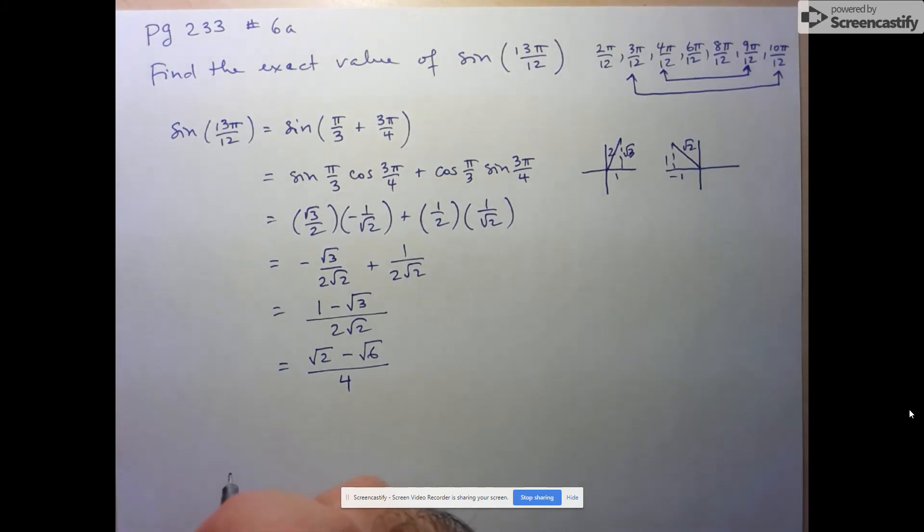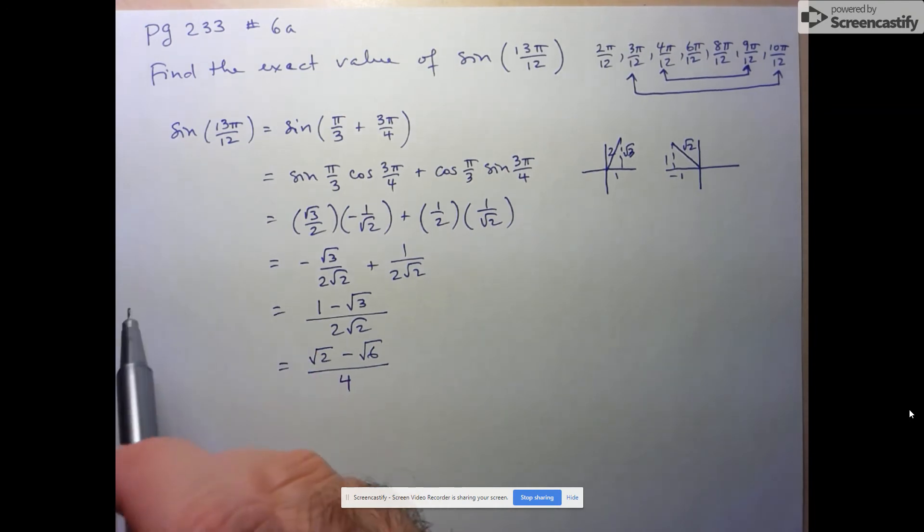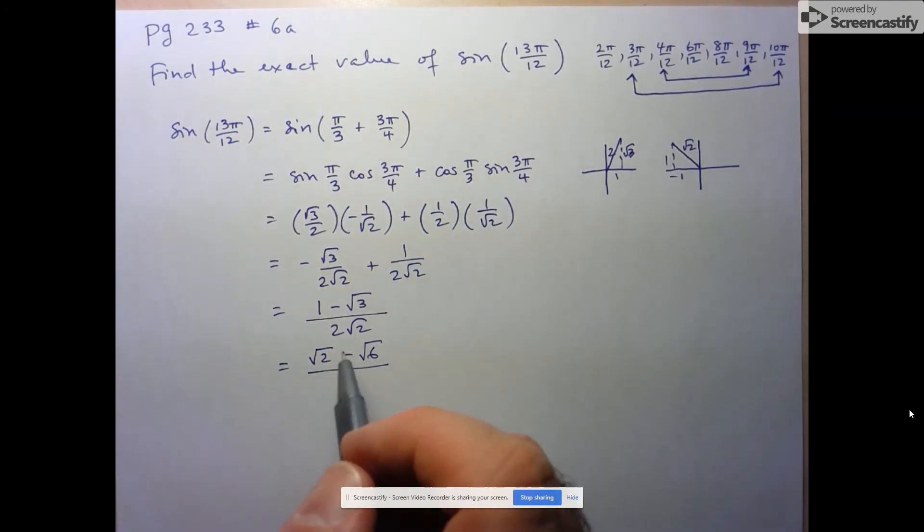Don't have my calculator here with me, but if you wanted to check your answer, just stick in sine of 13π over 12, see what approximation gives you, and then approximate this, and I think you'll find they're exactly the same.